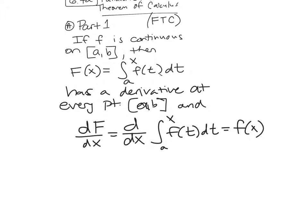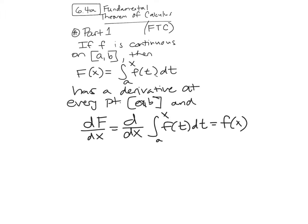Here's what it says — it says three things in this theorem. Number one: every continuous function is the derivative of some other function. And it also says every continuous function has an anti-derivative. And integration and differentiation are inverse functions of one another — they undo each other, like square root and squaring. Derivatives and integrals are inverses.